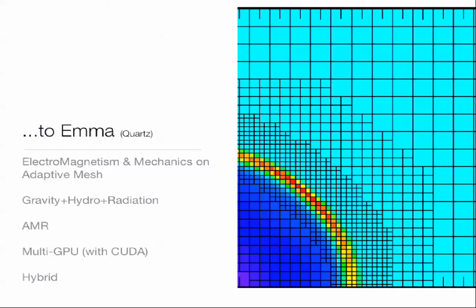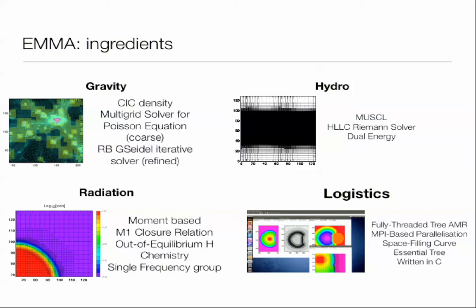So, EMMA stands for Electromagnetic Mechanics on Adaptive Mesh, for gravity, hydro, and radiative transfer. On AMR, multi-GPU, so the GPU part is coded with CUDA, and this is a hybrid code. So, here are all the basic ingredients that are in there. Nothing here is original, so to say. Those are very basic. Some of them are actually non-state-of-the-art procedures, but for gravity, we have particles. We project particles using the CIC, the standard CIC procedure, and the Poisson solver is a multigrid solver. For hydro, we're using standard Riemann solvers as well. And for radiation, it's pretty much the transposition of what we developed in ATON. So, this is a moment-based description of radiative transfer with the M1 closure relation, and also these ingredients. And the logistics, so basically data logistics, as I said previously.